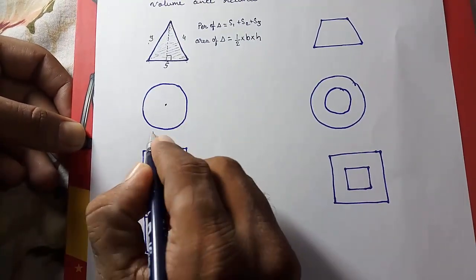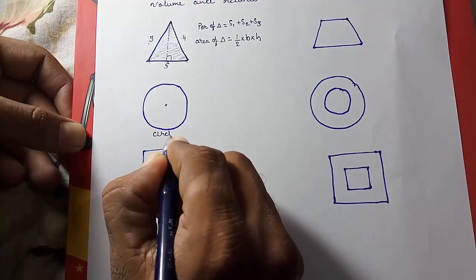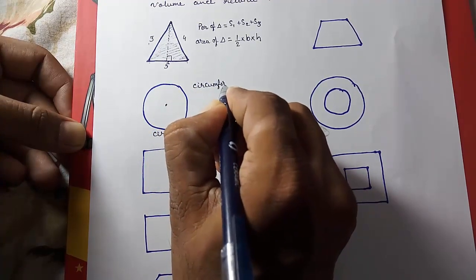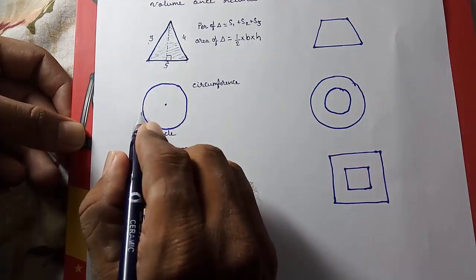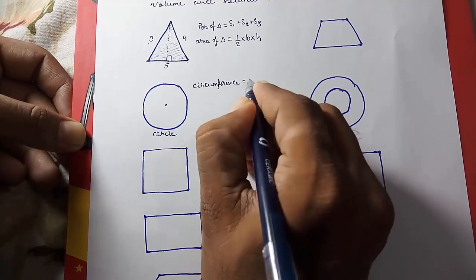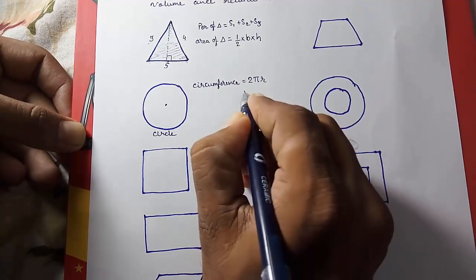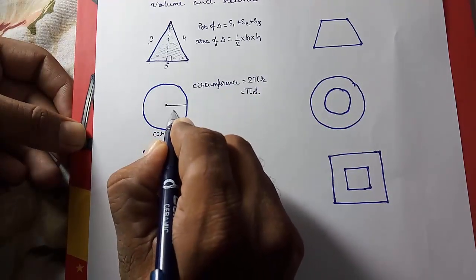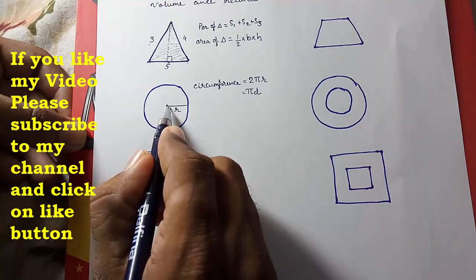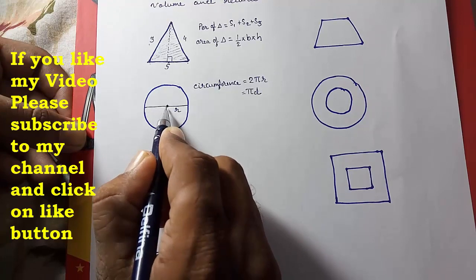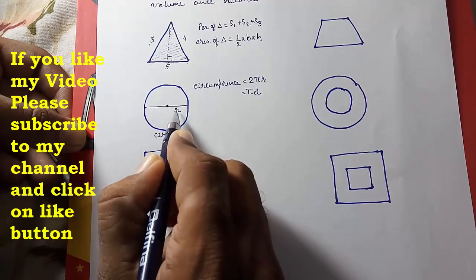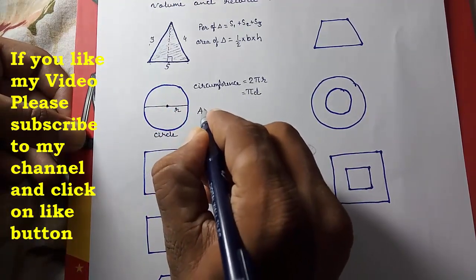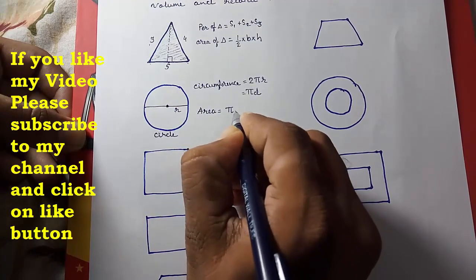Look here — this is a circle, as we all know. Here, instead of perimeter, we call it circumference. Circumference means the length of the outer boundary. We can find it with the help of 2πr, or you can also say π multiplied by the diameter. The distance from the center to the circle is called the radius, and the whole distance — a chord passing through the center — is called the diameter. Diameter is double the radius. If you want to find the area of a circle, it is πr².